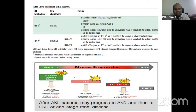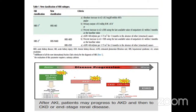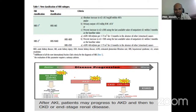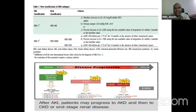HRS-AKI diagnostic criteria include absolute increase in serum creatinine greater than 0.3 mg/dL within 48 hours, or urine output less than 0.5 ml/kg body weight for greater than 6 hours, or percentage increase in serum creatinine greater than 50% using the last available outpatient value within 3 months as baseline. HRS-non-AKI includes HRS-AKD and CKD, diagnosed based on eGFR less than 60 ml/min/1.73 m² for less than 3 months in the absence of other structural causes, or eGFR less than 60 for greater than 3 months, defined as CKD.